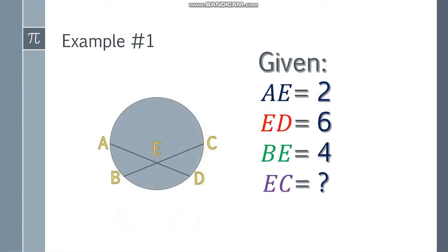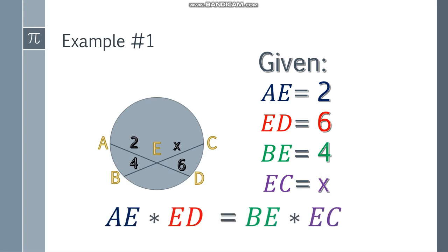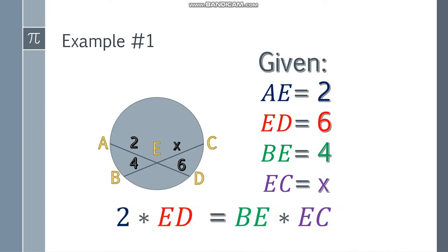So first example: given that AE is 2, ED is 6, and BE is 4, find EC. So how do we find the value? First step is always write the formula. So AE times ED is equal to the product of these two segments. So we have 2 here, and ED is 6, BE is 4, and EC we don't know. So let's call it X or EC.